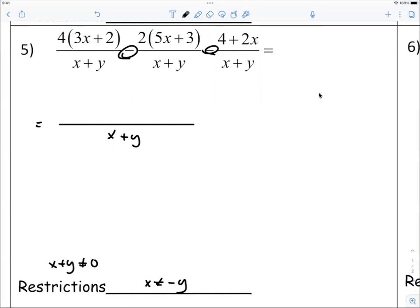All right, so let's see. We have 4 times 3x plus 2, so that would give us 12x plus 8, okay?